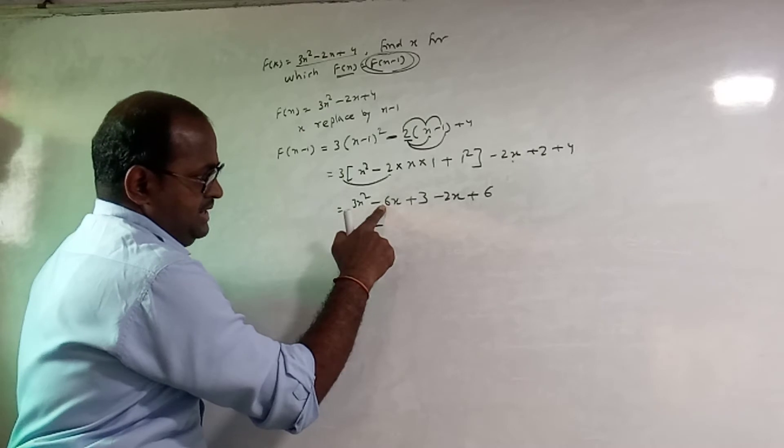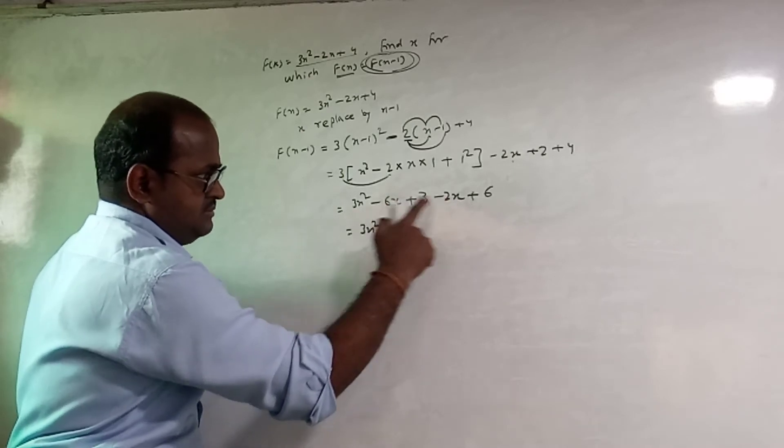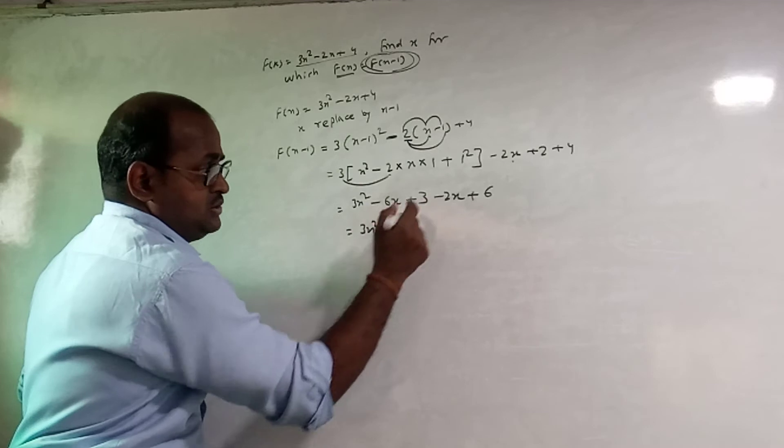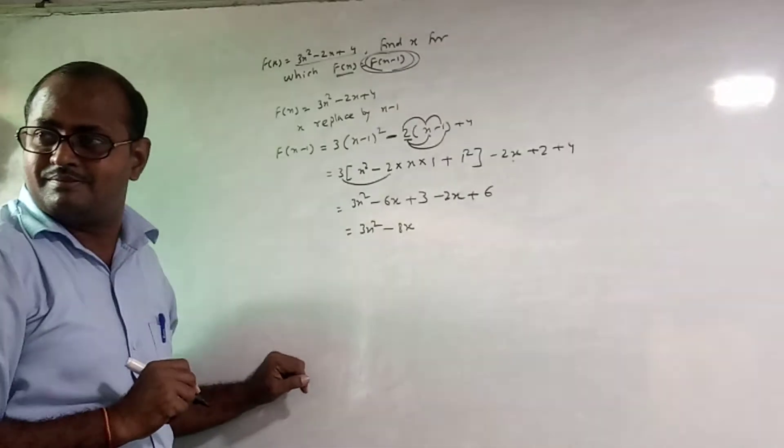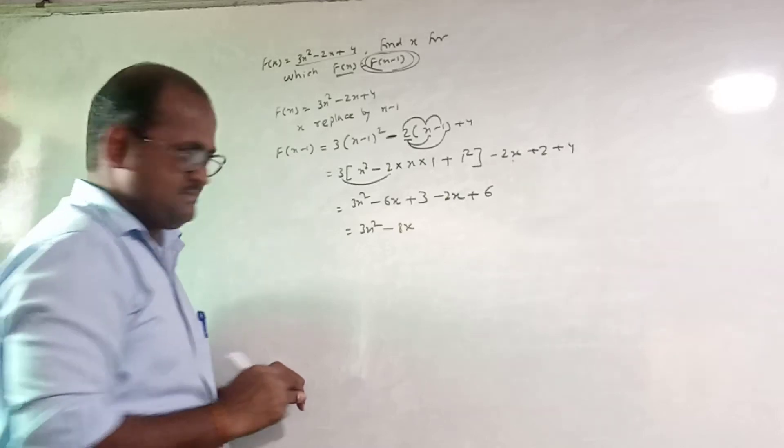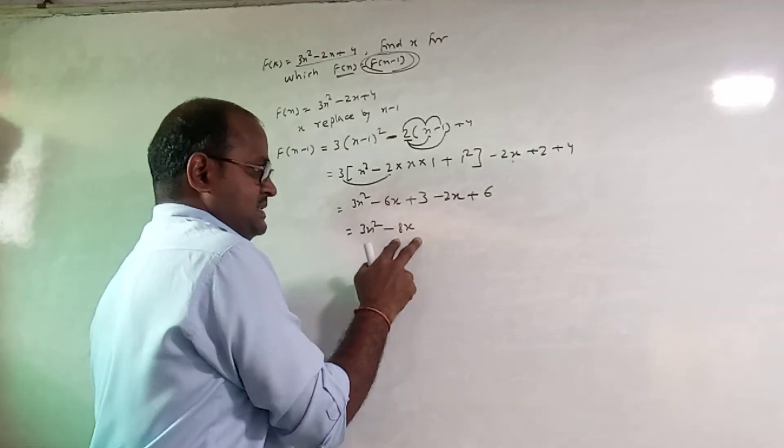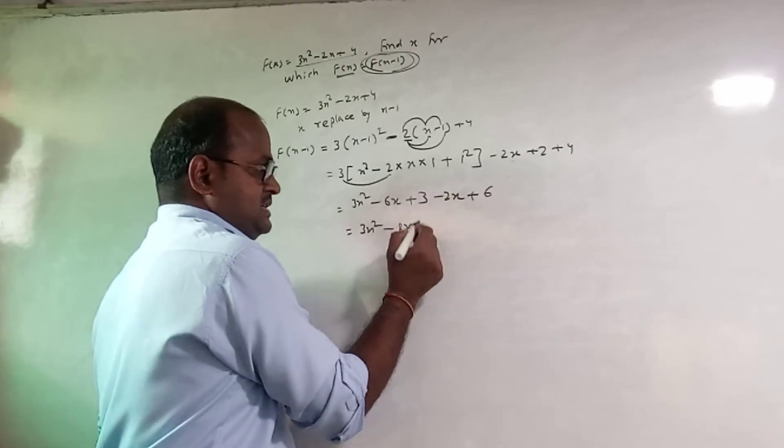1 square, 6x minus 2x minus 6 minus 2 is minus 8x minus 6 minus 2 is minus 8x, and 3 plus 6 is 9.